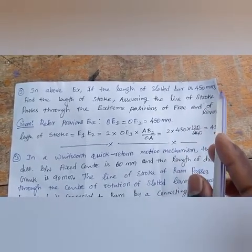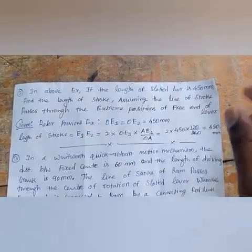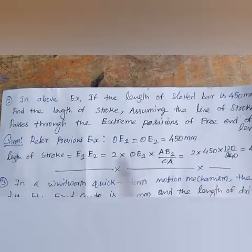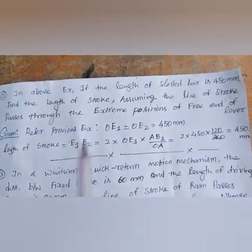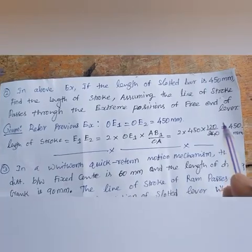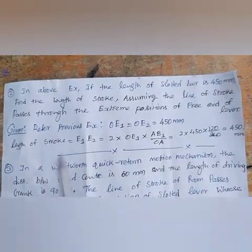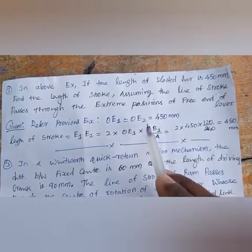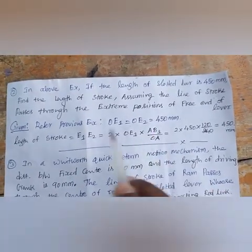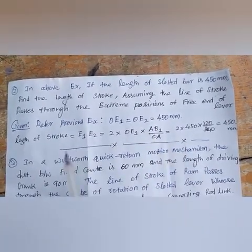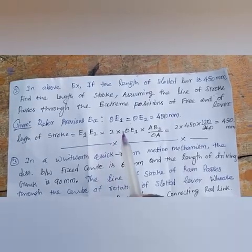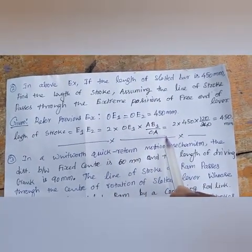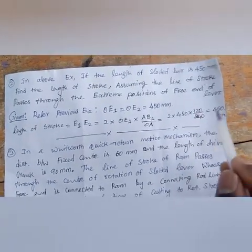Next part: the length of the slotted bar OE1 = OE2 = 450 mm. Find the length of the stroke. The length of stroke = 2 × OE1 × AB1 / OA = 2 × 450 × 120 / 240 = 450 mm. Refer the previous figure for the geometry.